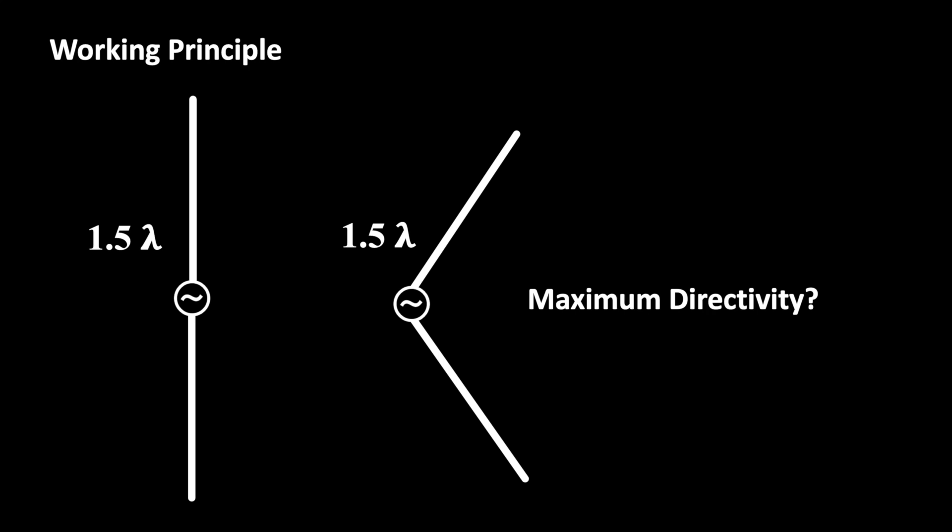Let's try that and arrange the two rods in a V shape. As a result of this the fields phase relations are changing depending on the direction. An initial test is showing us that the directivity becomes stronger to the right and weaker to the left.